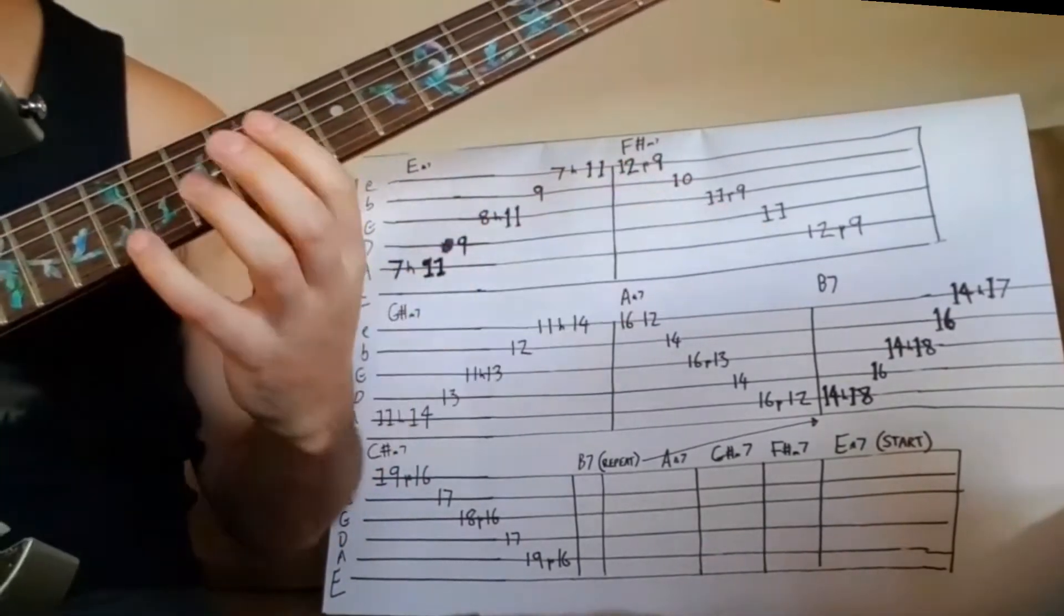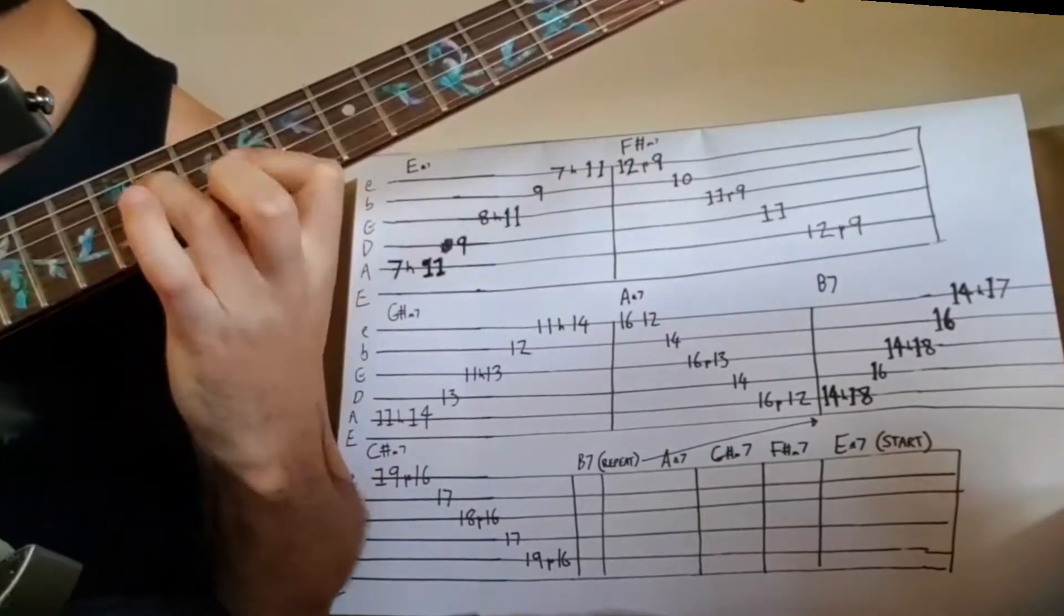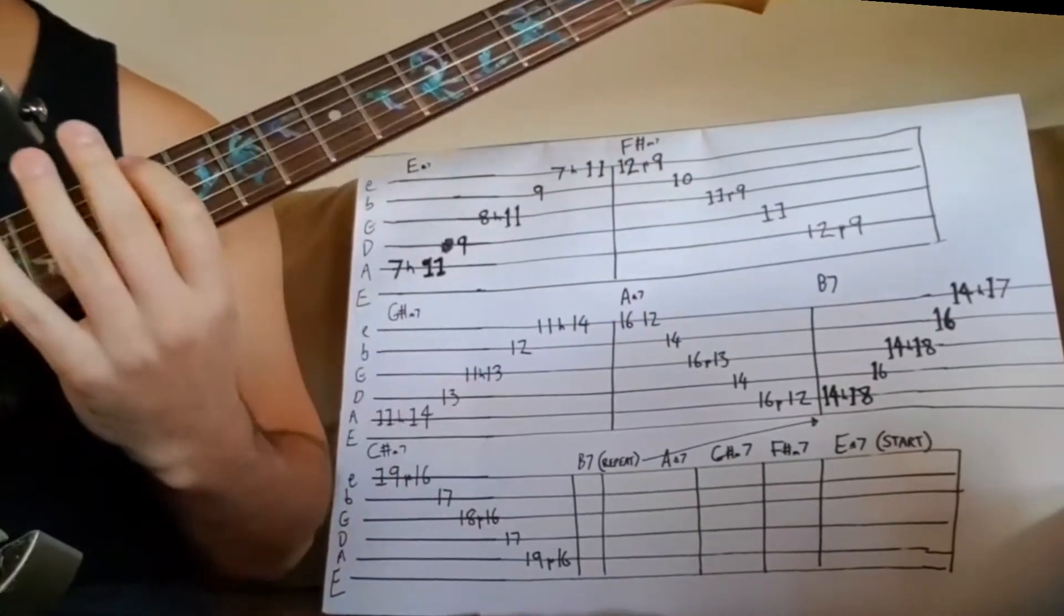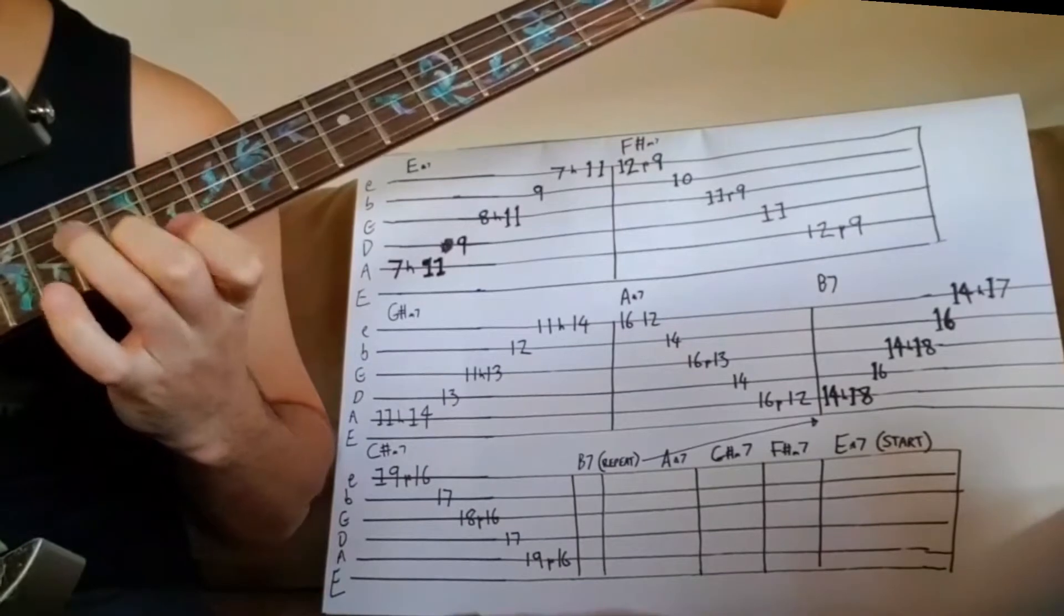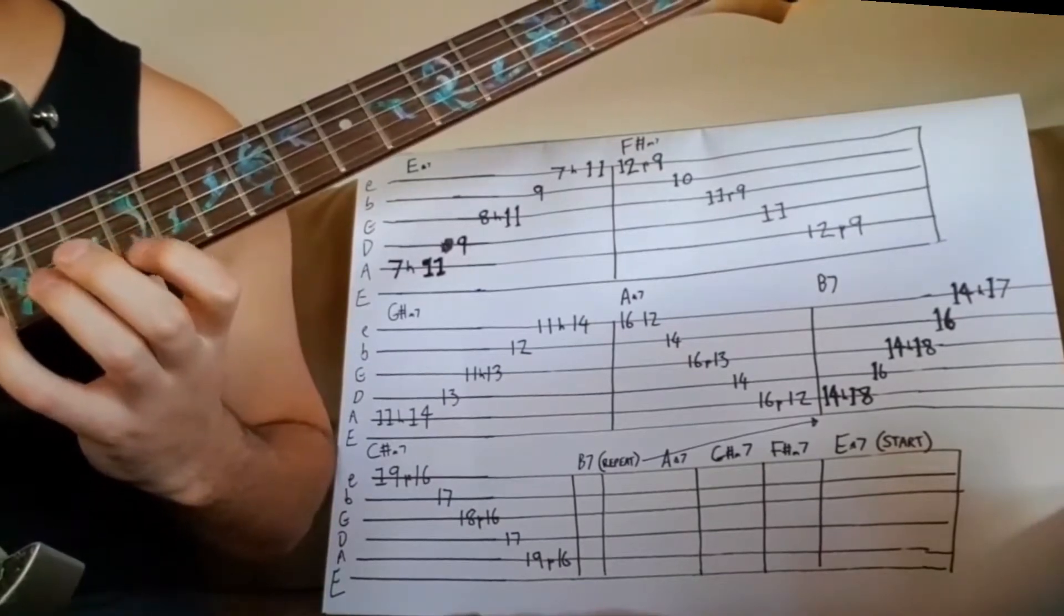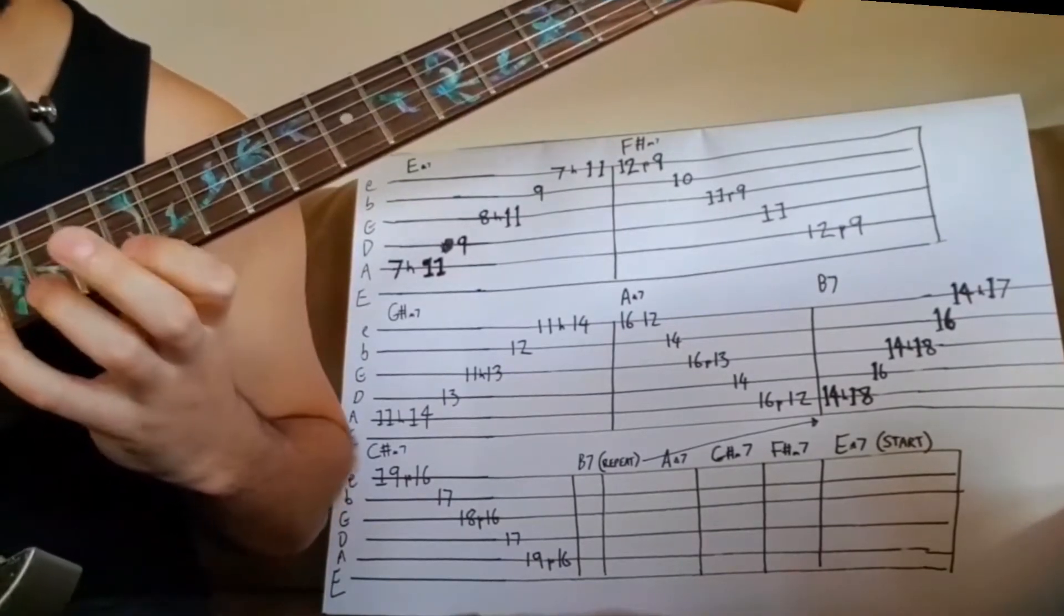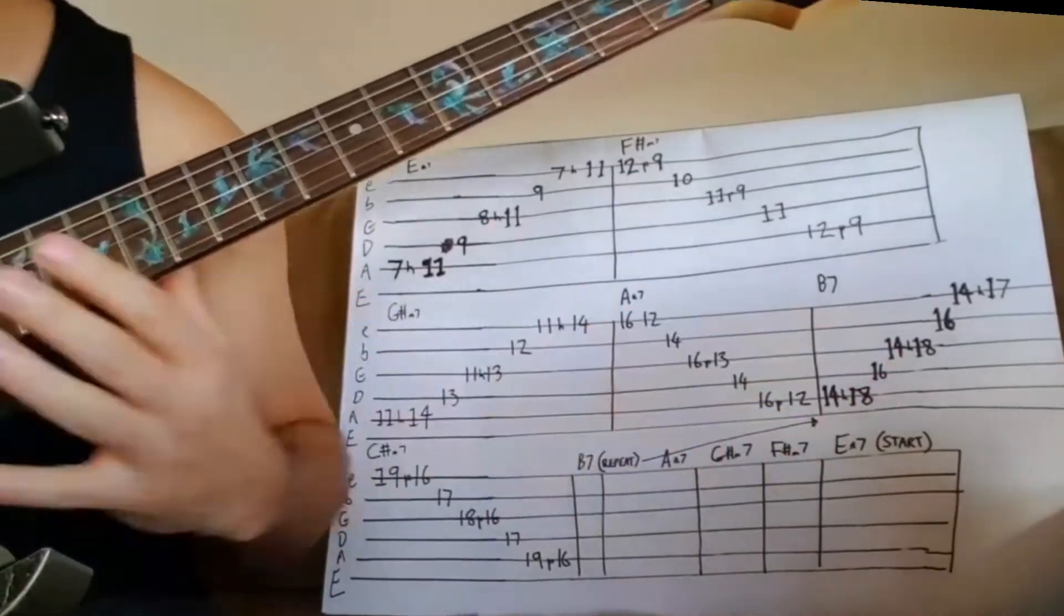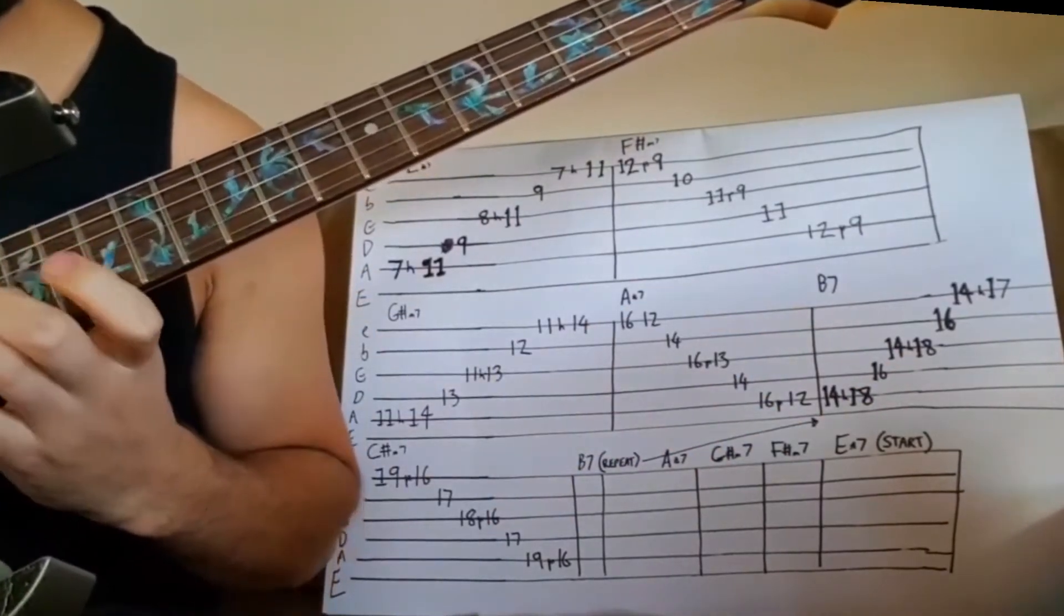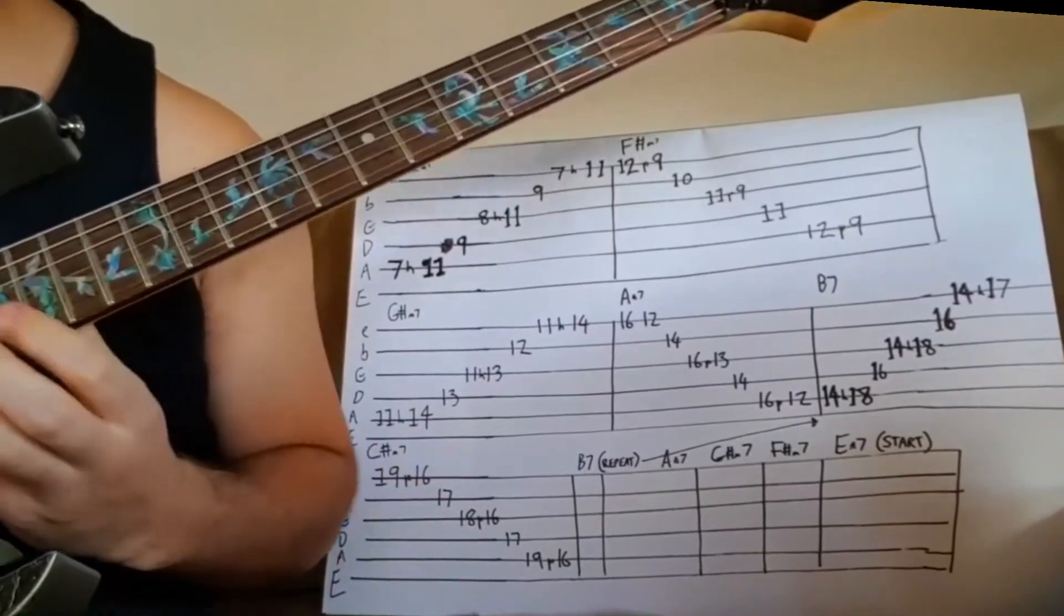Now going down the F sharp minor, up G sharp, down A, up B7.